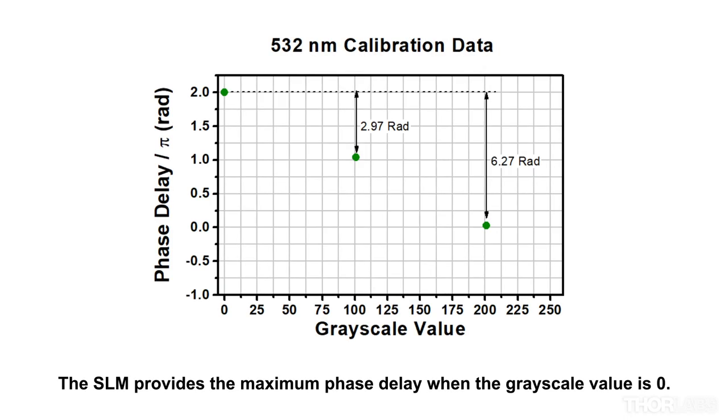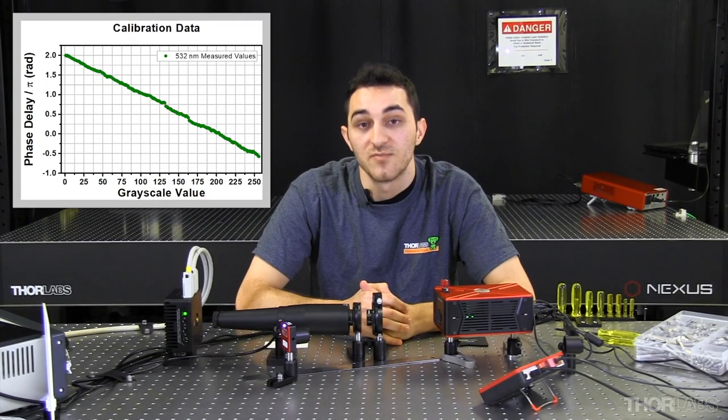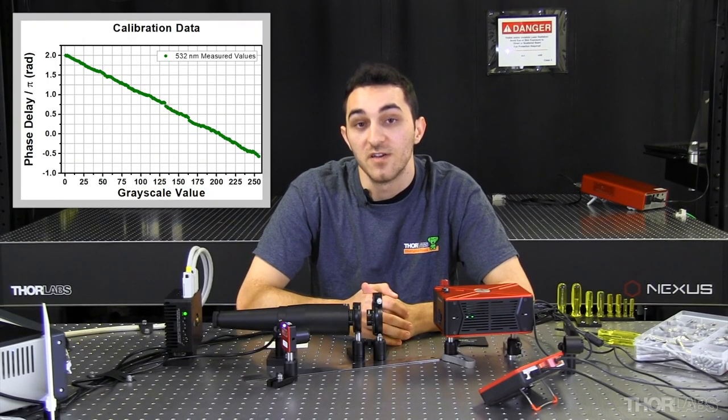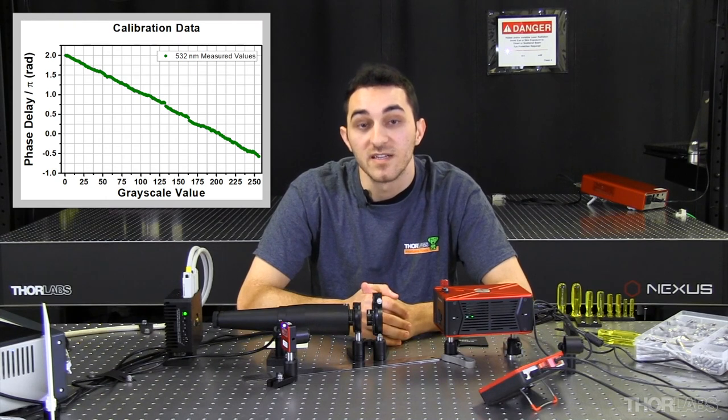Once I have recorded all the phase delays, I can plot them against their corresponding grayscale value to obtain a calibration curve for this setup at 532 nanometers. I can now use this calibration curve to select the grayscale value for the phase delay needed at each pixel.